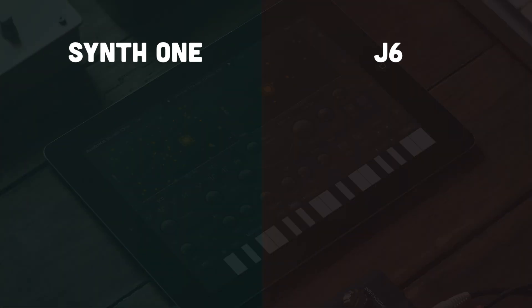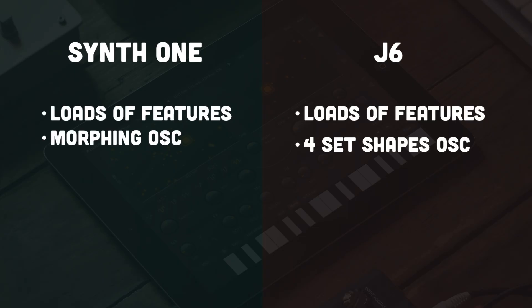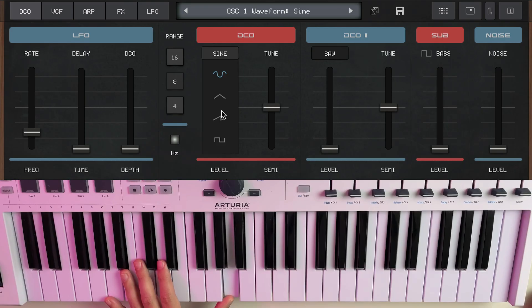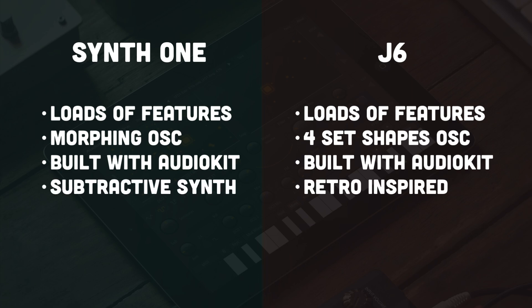So let's do a quick comparison of the two. Both apps are packed full of features. Synth 1 uses morphing oscillators, while J6 has four set waveform shapes. They're both built with the open source audio framework AudioKit.